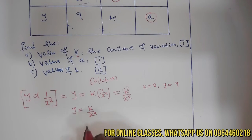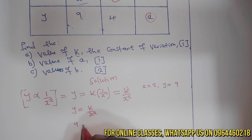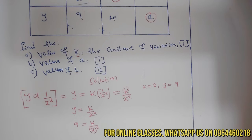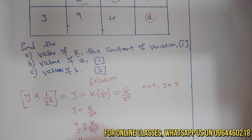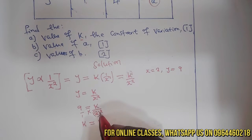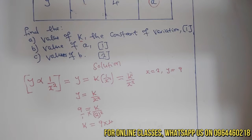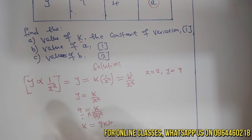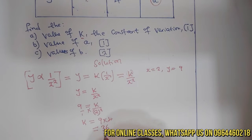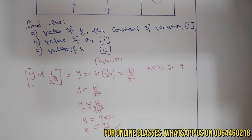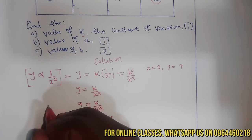Substituting into the equation: 9 = k / 2². Cross-multiplying gives k = 9 × 4 = 36. So the value of k is 36.